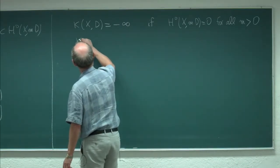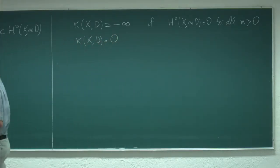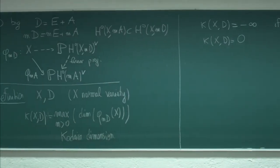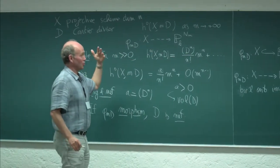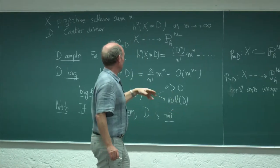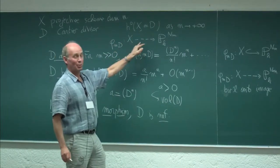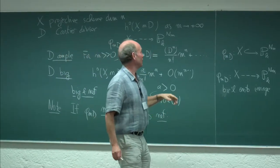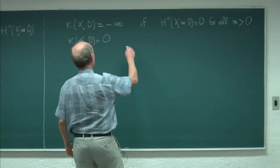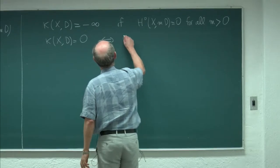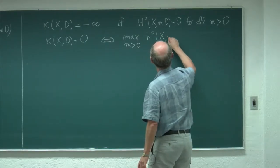There is another easy case: when is the Kodaira dimension zero? The image of the map here is never contained in a hyperplane. To say the maximum is zero means the image is always a point, which can only happen if this is P^0, i.e., zero-dimensional projective space. This is equivalent to saying the maximum of h0(mD) over m positive is one.